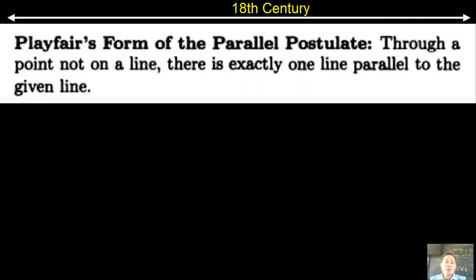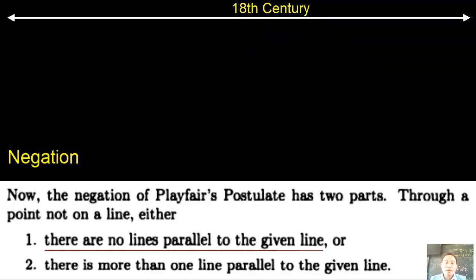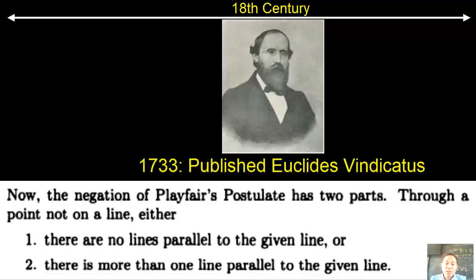So negation of Playfair's postulate has two parts. First, through a point not on a line, either case number one: there are no lines parallel to the given line, or case number two: there is more than one line parallel to the given line. The first case was easy to take care of using the definition of parallel lines provided by Euclid. However, the second case, Saccheri could not seem to find a clear contradiction, and it convinced none of the mathematicians. It was published in 1733 in his book, Euclid Vindicated.